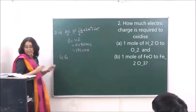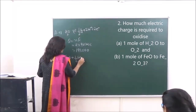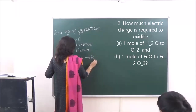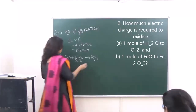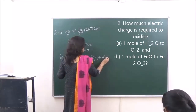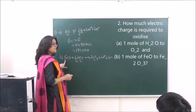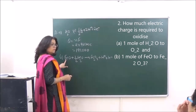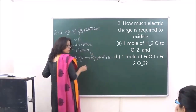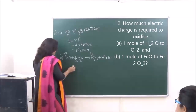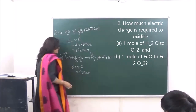For the second part, FeO to Fe₂O₃: iron's oxidation state changes from +2 to +3, so only 1 electron exchange takes place. Therefore Q equals NF equals 1 into 96500 coulombs.